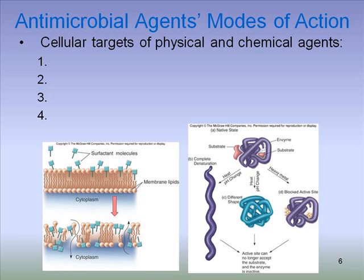The third cellular target is cellular synthetic processes — making DNA and making RNA. Those agents tend to be fairly specific. For example, UV light breaks DNA and therefore specifically targets DNA processes.